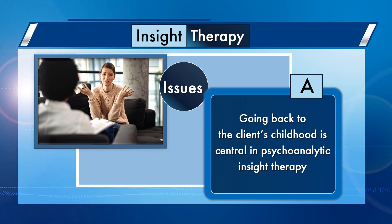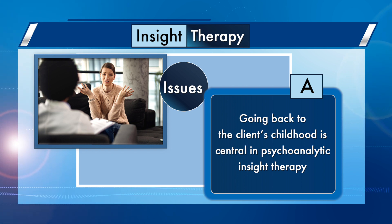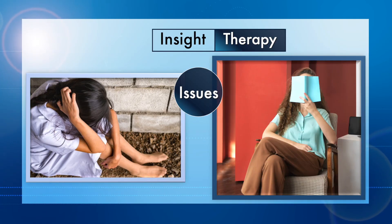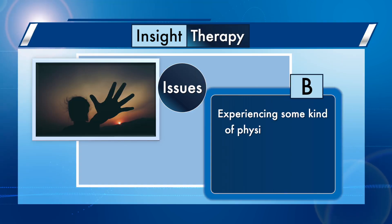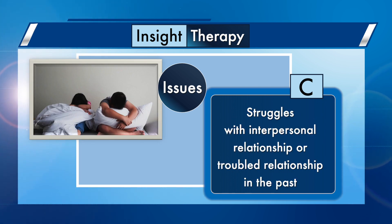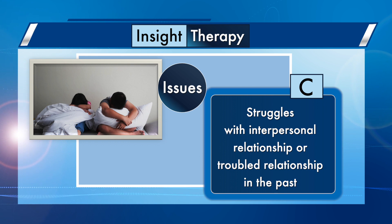A person's childhood can have a significant impact on their adult life. What we go through as a child shapes our future experiences, personality, beliefs, attitude, and thoughts. For instance, a child who lacks a warm and close relationship with their parents might grow up to be a very withdrawn person who dislikes connecting with others. Abuse is another theme — experiencing physical or sexual abuse in the past might come up during insight therapy. Struggles with interpersonal relationships, troubled relationships in the past, and difficulties with colleagues or friends may be indicative of an unhealthy relationship with significant others in the past, such as parents or siblings.